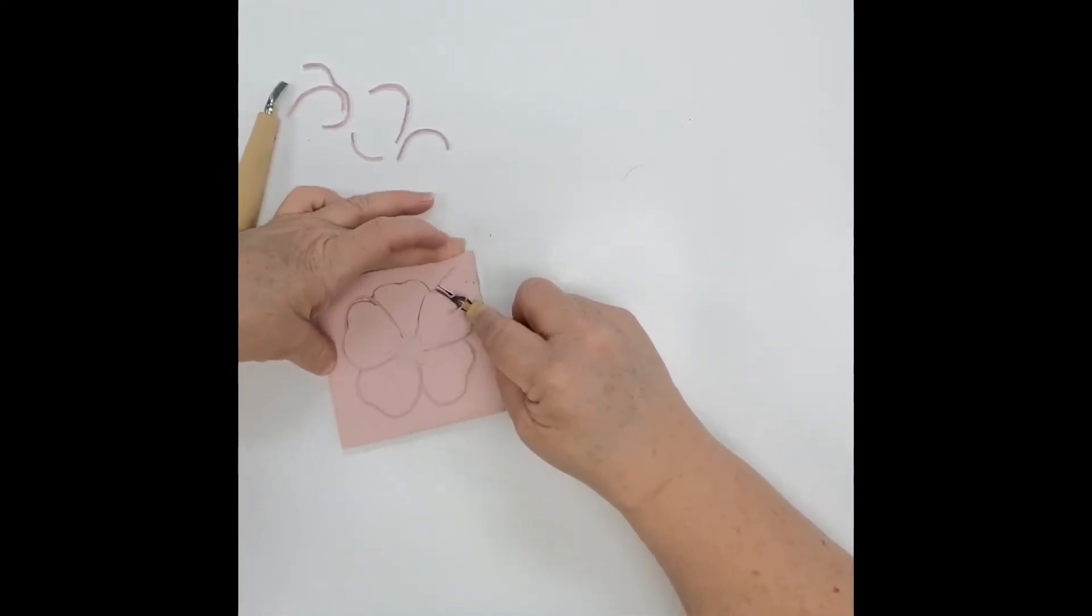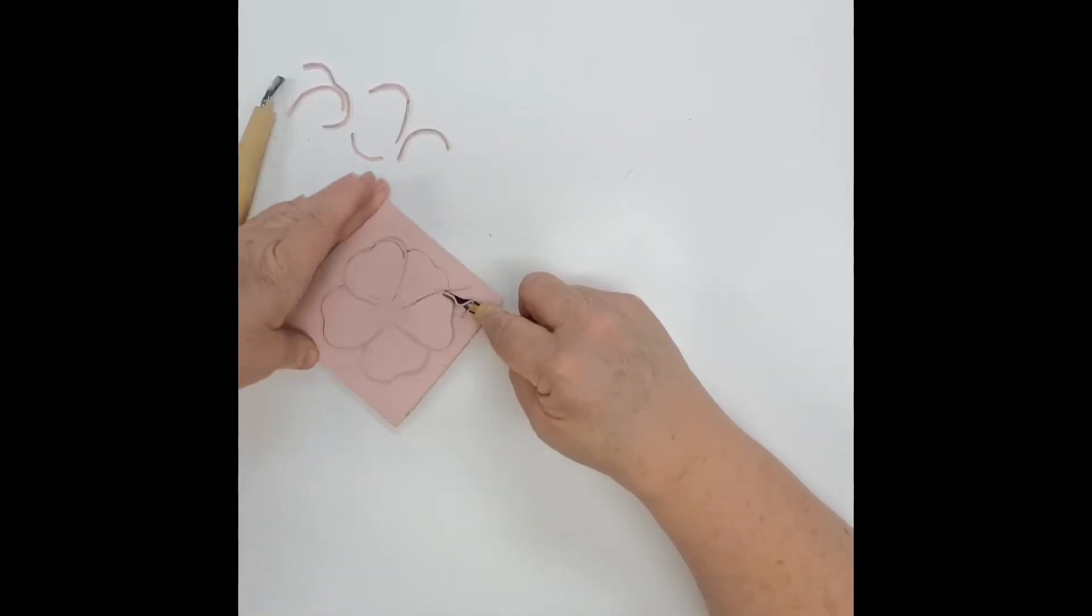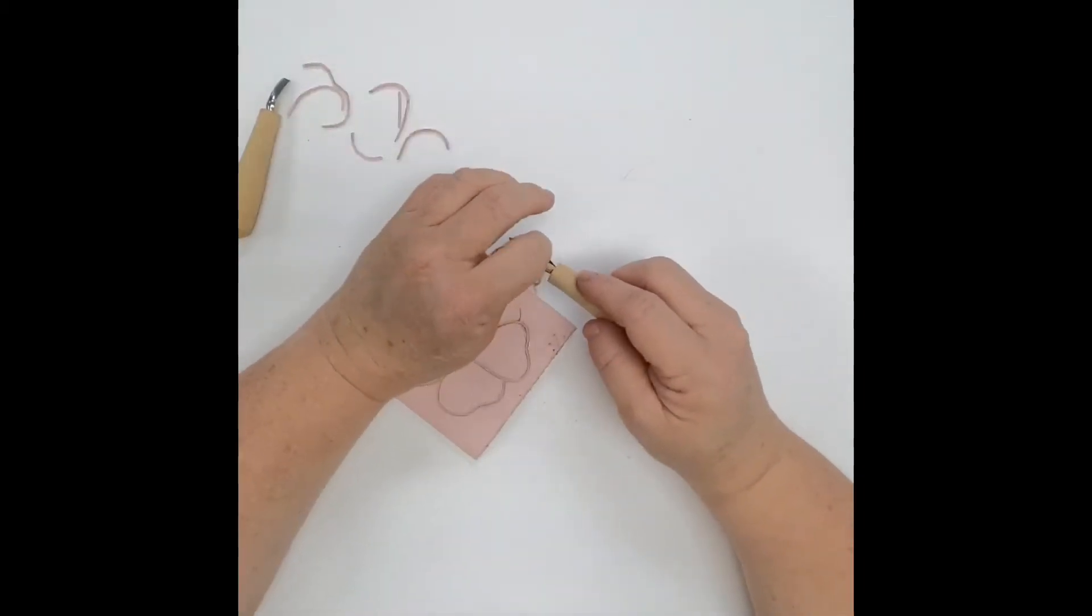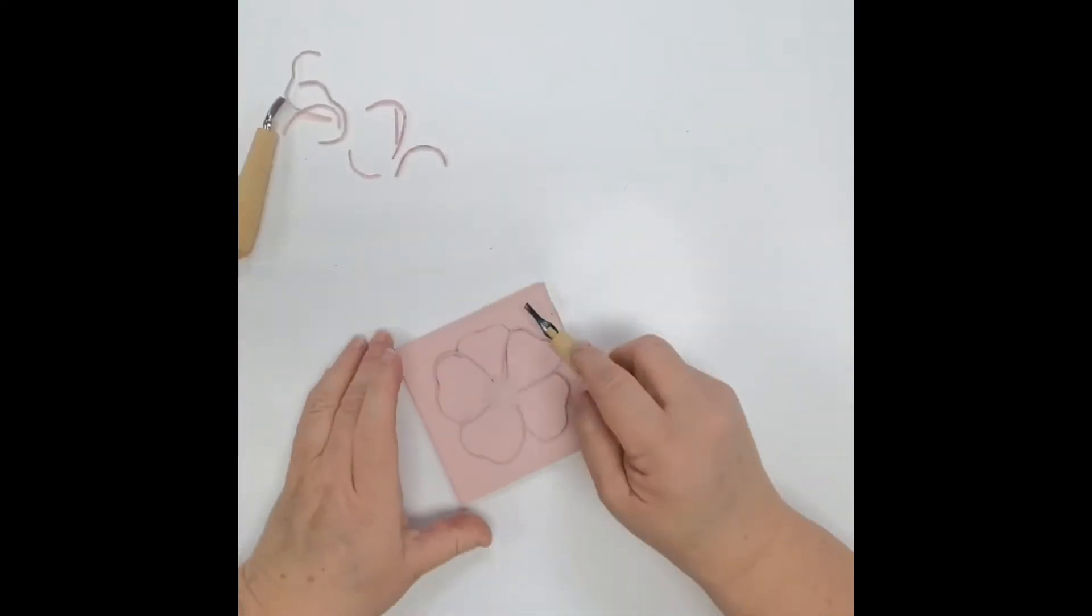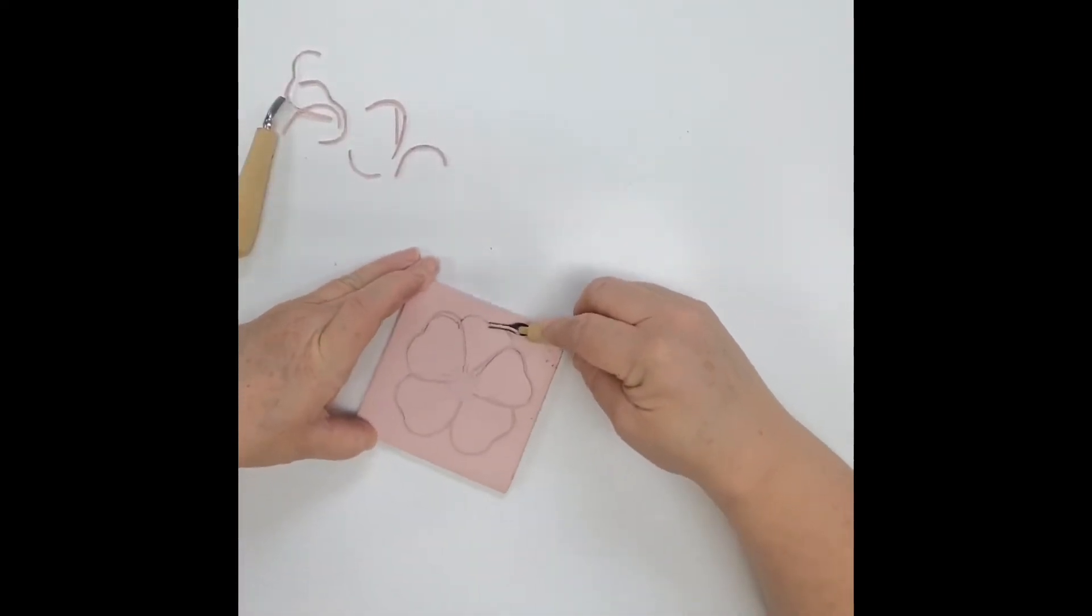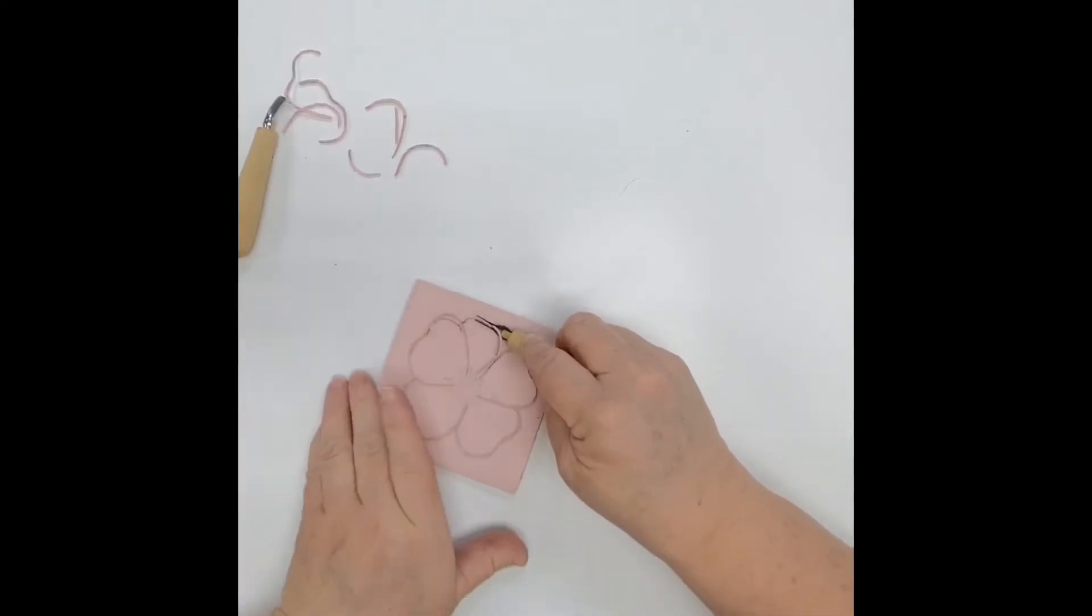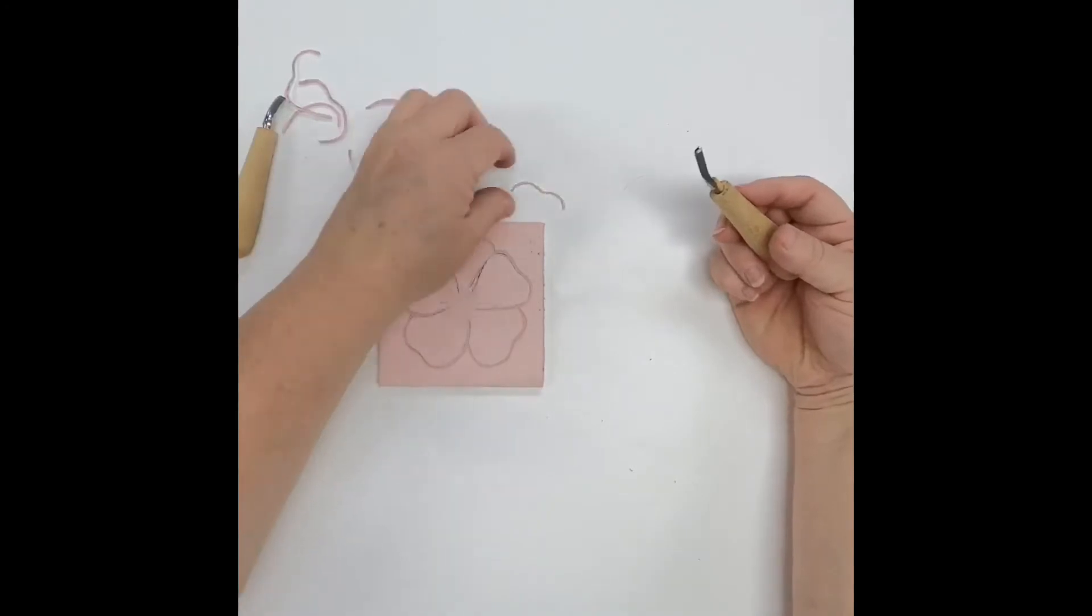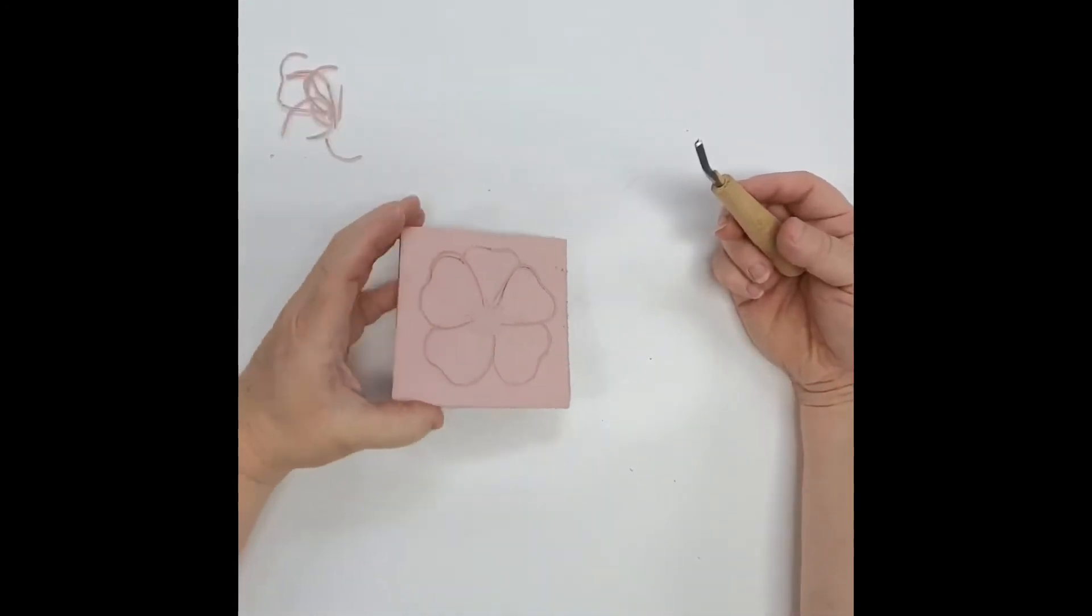I think we have a smoke detector that the battery is dying in. I don't know if you can hear the chirping, but every now and then it chirps. Okay, so we've got our flower outlined.